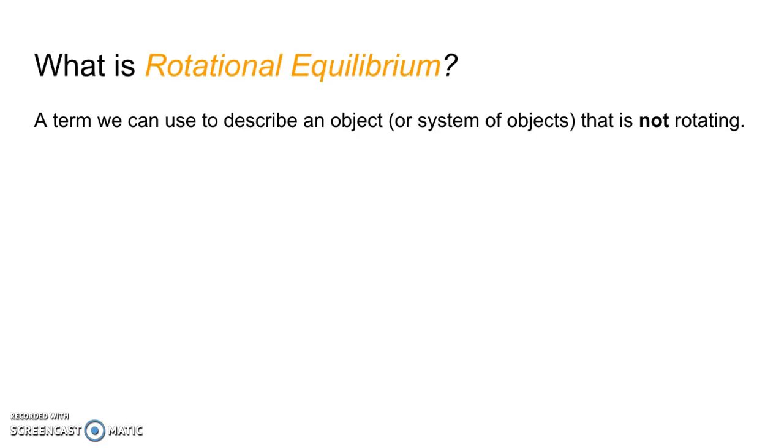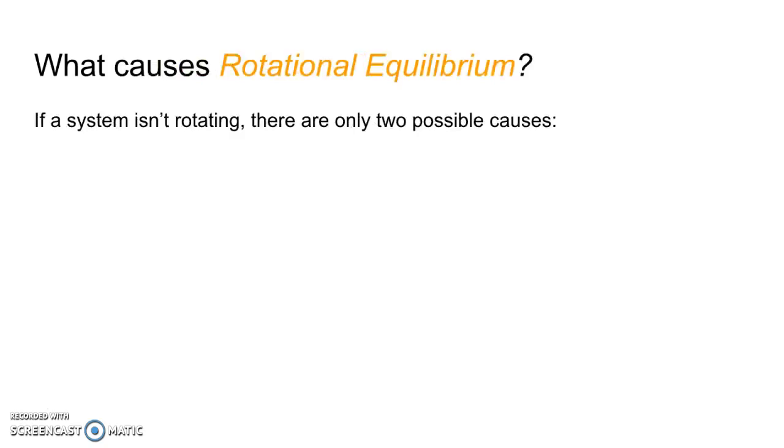Now, another term before we get into examples. What is rotational equilibrium? Rotational equilibrium is a term that we can use to describe an object or a system of objects that are not rotating. Anything that's sitting still, it's in rotational equilibrium.